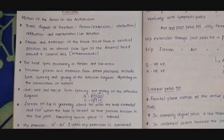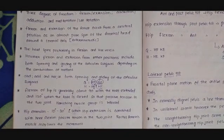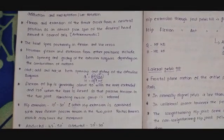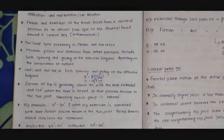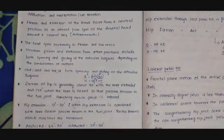The head spins posteriorly in flexion and anteriorly in extension. But if you perform flexion and extension from some other position — for example, from the abducted position of the hip — both spinning and gliding are arthrokinematic movements that take place between the articular surfaces. Abduction, adduction, medial rotation and lateral rotation both involve spinning and gliding of the articular surfaces.